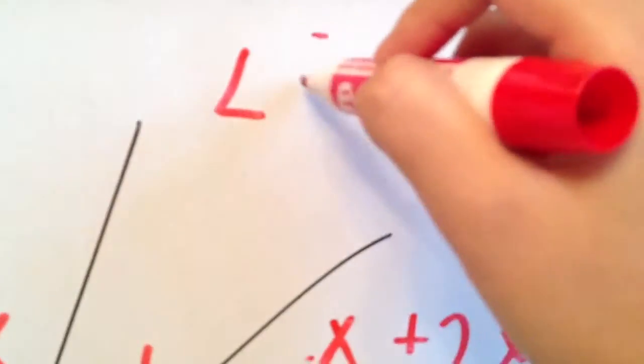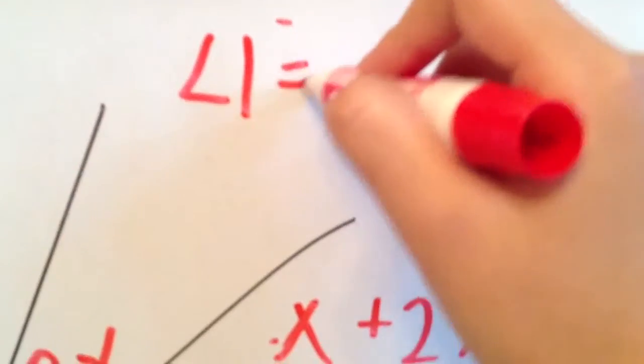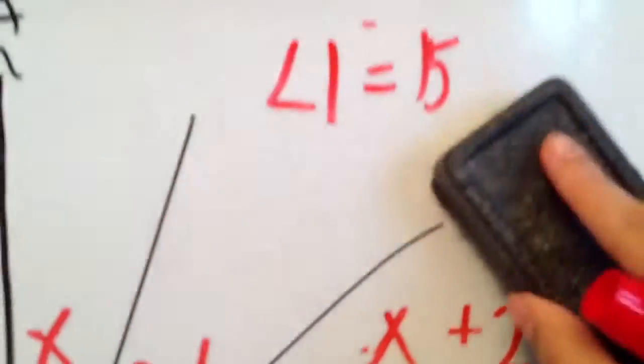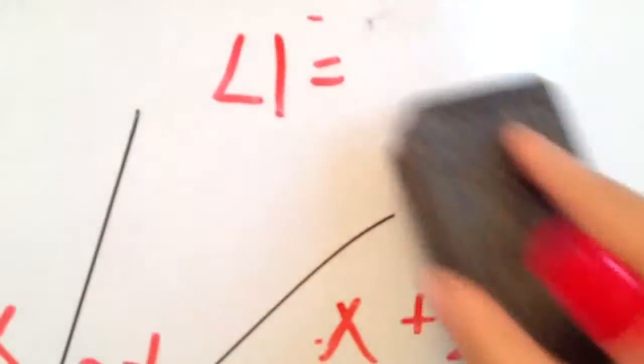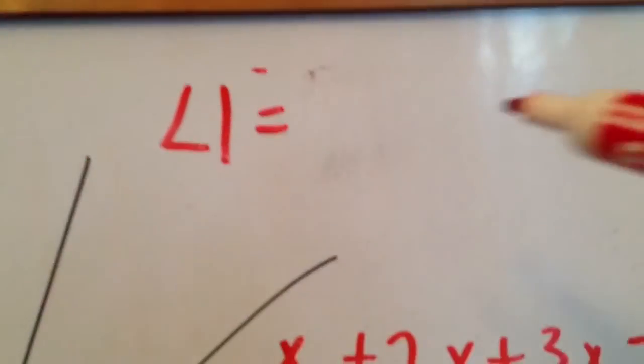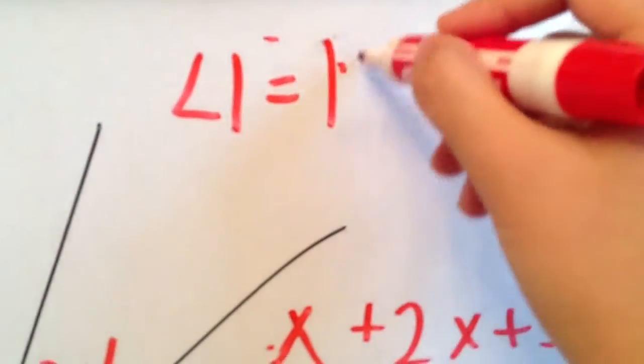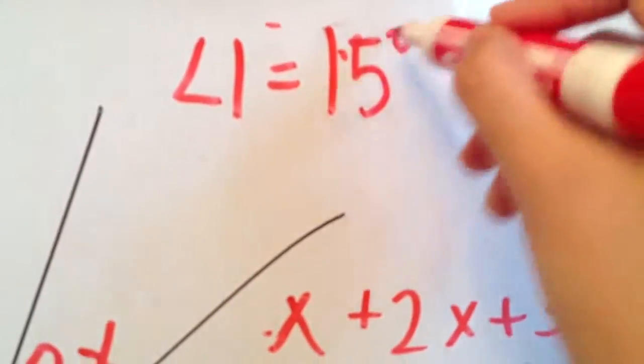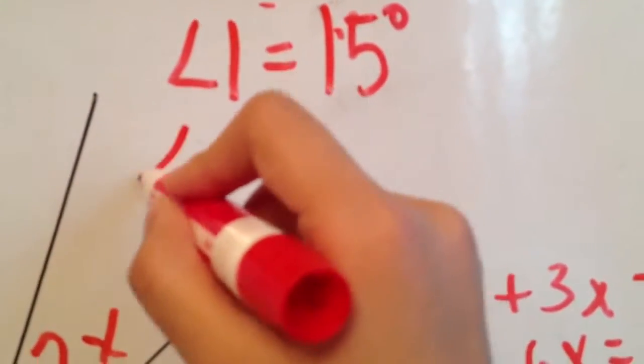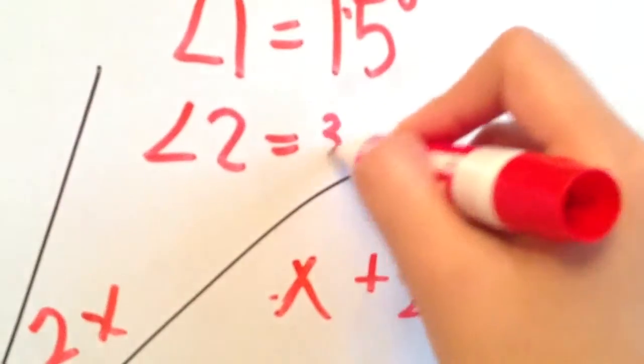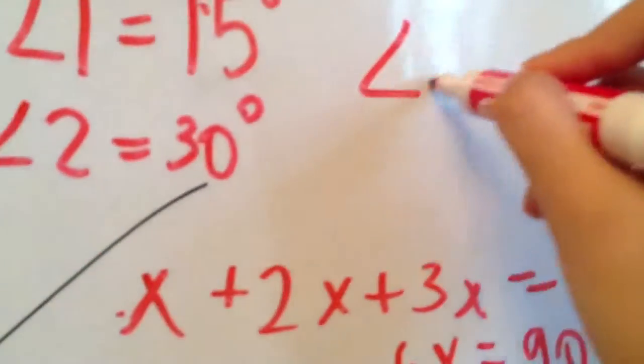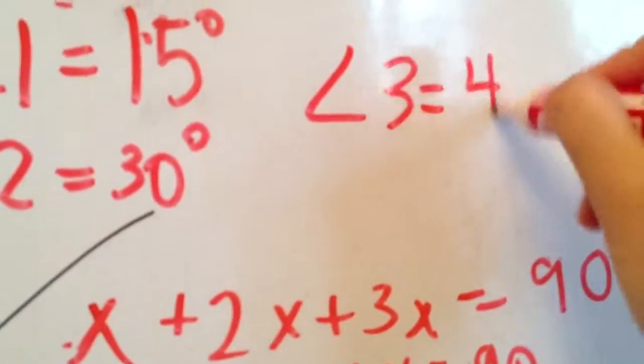we can say that angle 1, we have to write this correctly, equals 15 degrees. So angle 1 is 15 degrees, angle 2 is 30 degrees, and angle 3 is 45 degrees.